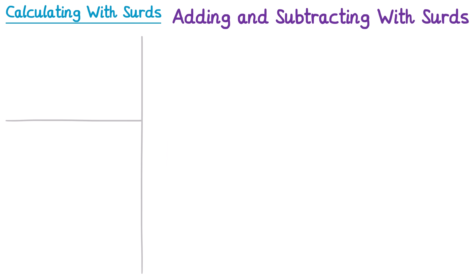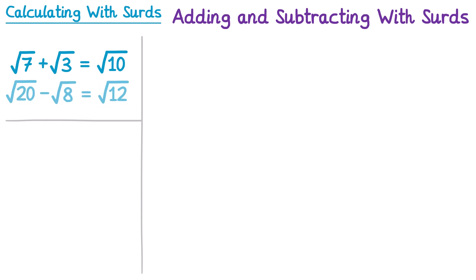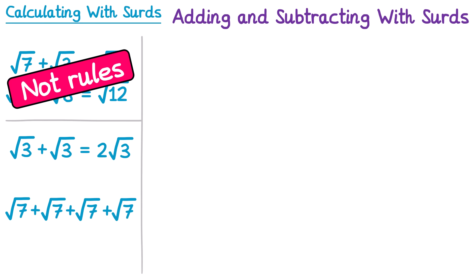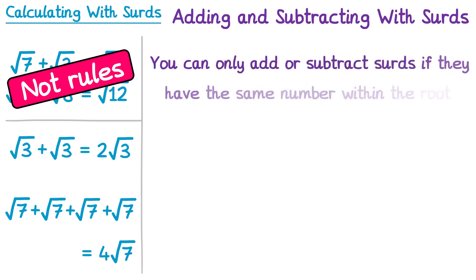Earlier we looked at what happens when you add and subtract surds, and saw that these were not valid rules. However, you can add and subtract surds as long as the number inside the surd is the same. So the square root of 3 plus the square root of 3 gives 2 root 3. And four copies of the square root of 7 gives 4 root 7. This only works since the number inside the surd is the same — you can only add and subtract surds together if they have the same number within the root.